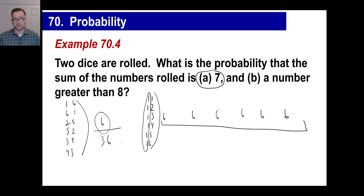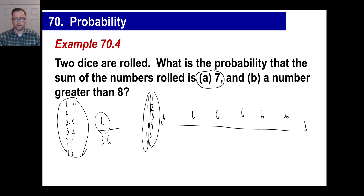The positive outcomes you want — lucky seven — are six possibilities out of a total of 36. Six out of 36 reduces to one out of six. That is the probability that you're going to roll a seven at any one time.